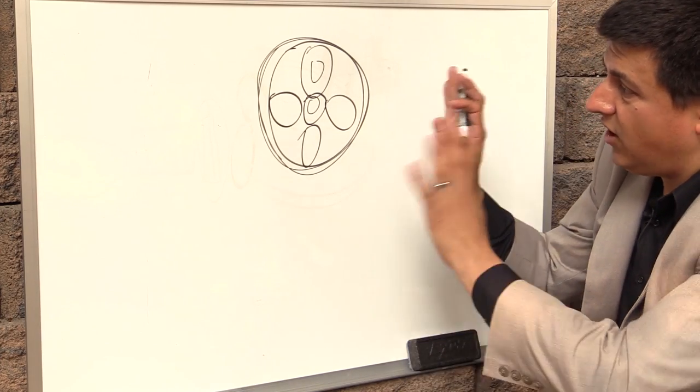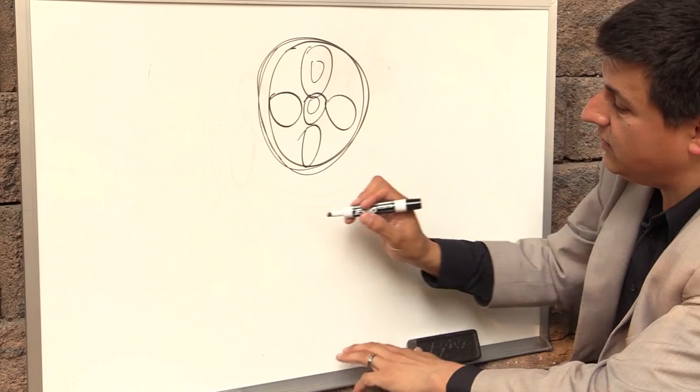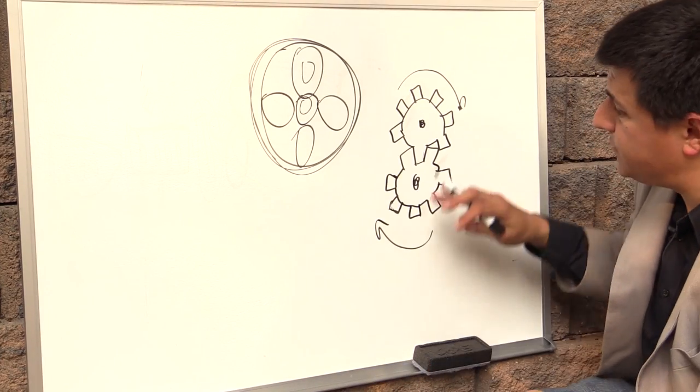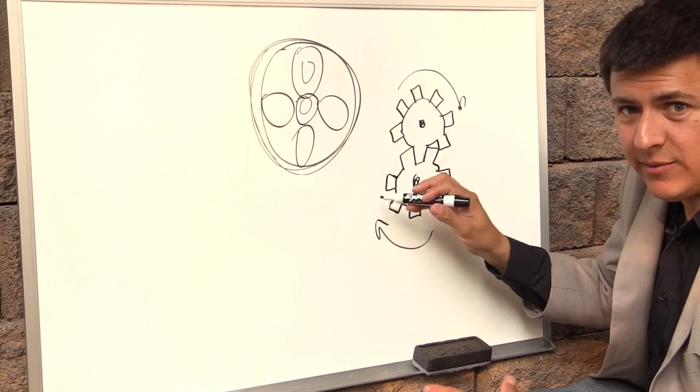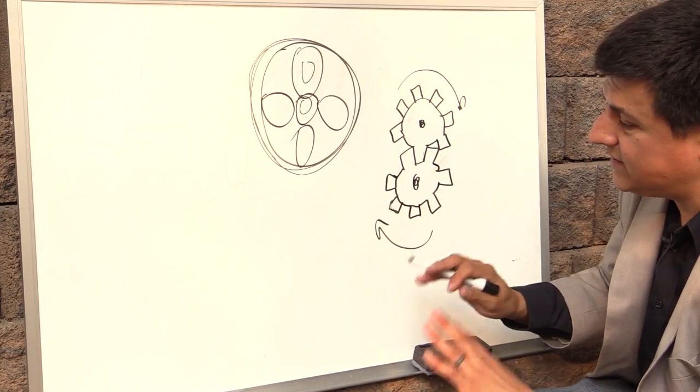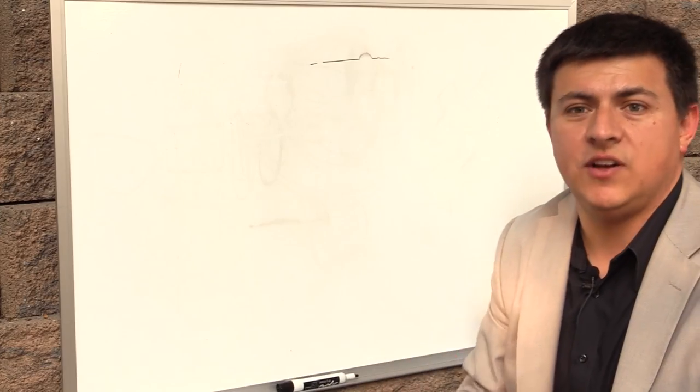A manual transmission on the other hand uses more traditionally cut gears like this. This one's rotating that way which causes that one to rotate that way. So let's put this all together.